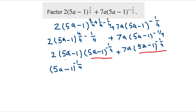What remains after factoring out the GCF: from the first term, 2 times (5a minus 1) distributes to 10a minus 2. From the second term, we keep plus 7a. So the bracket contains 10a minus 2 plus 7a.